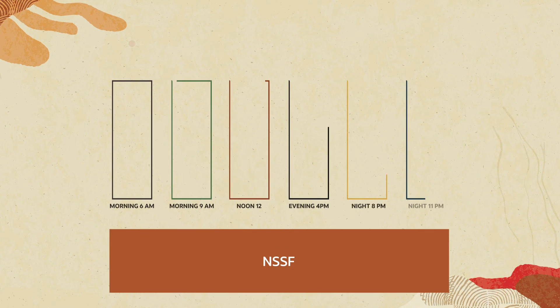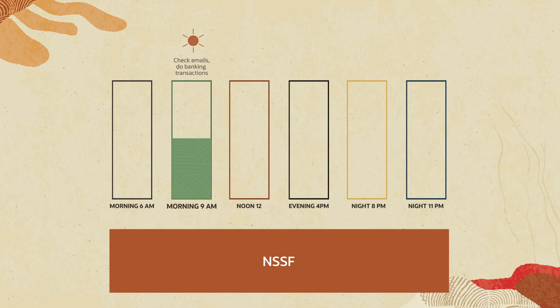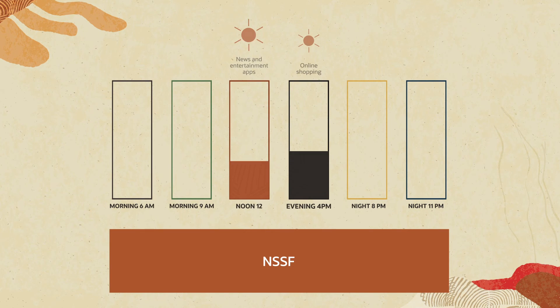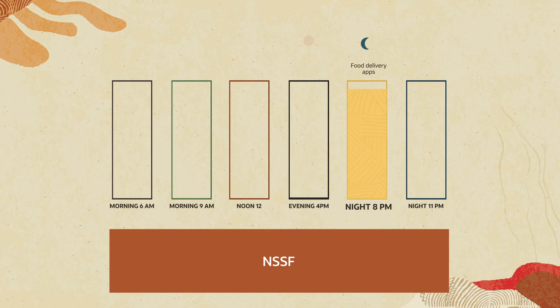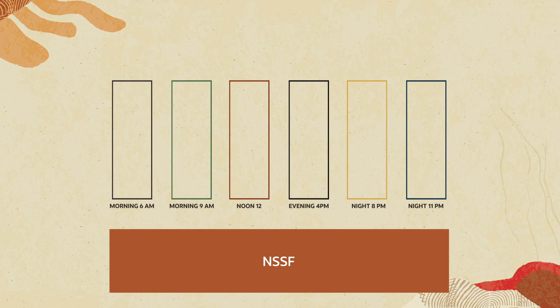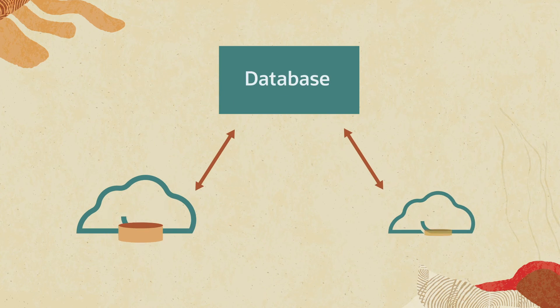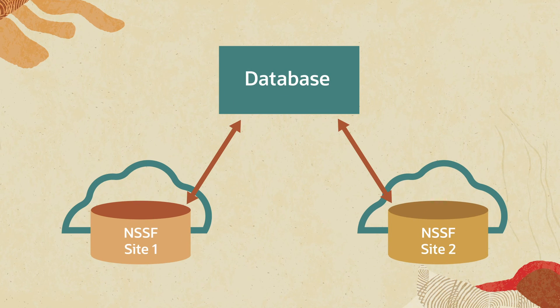OCNSSF can be customized to select a network based on the time of day using enhanced policy to avoid congestion and overloading of a single slice. It provides a two-site, geo-redundant deployment model for resilience.